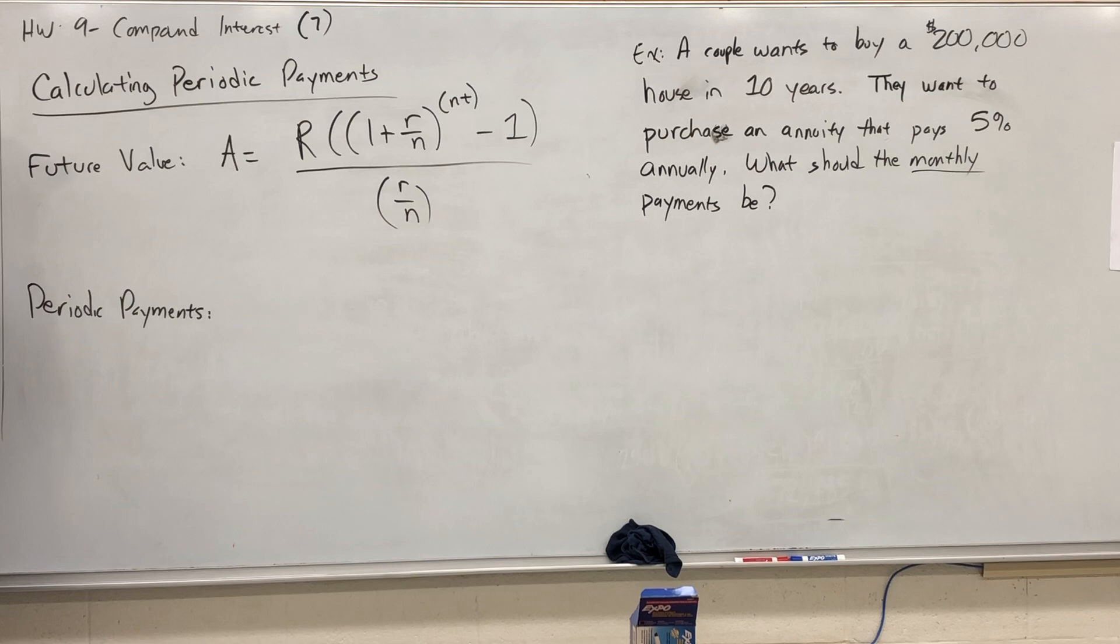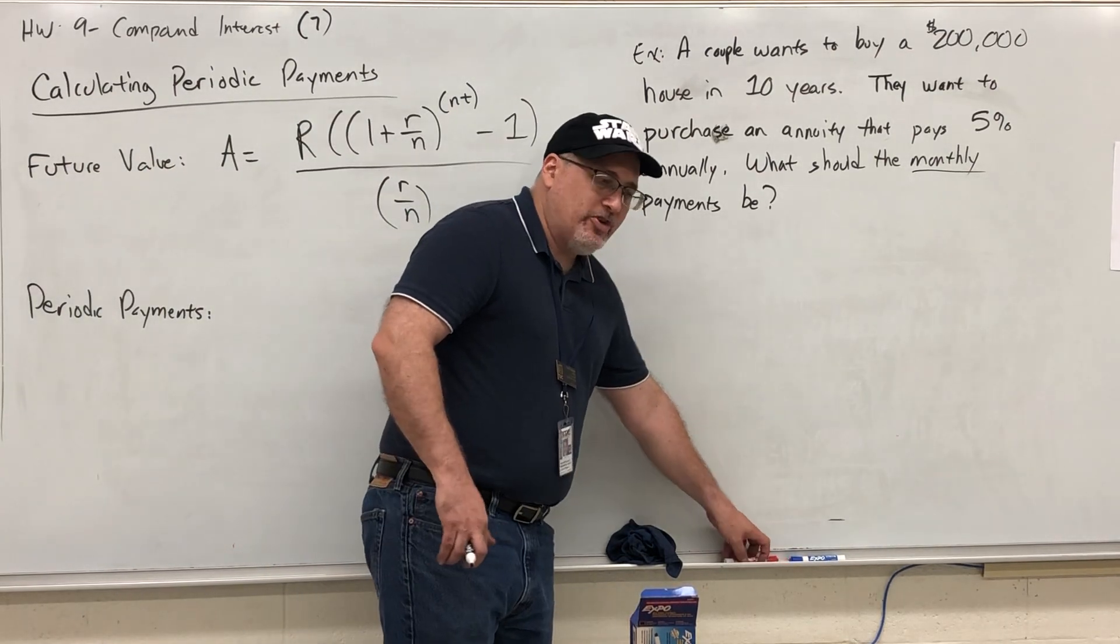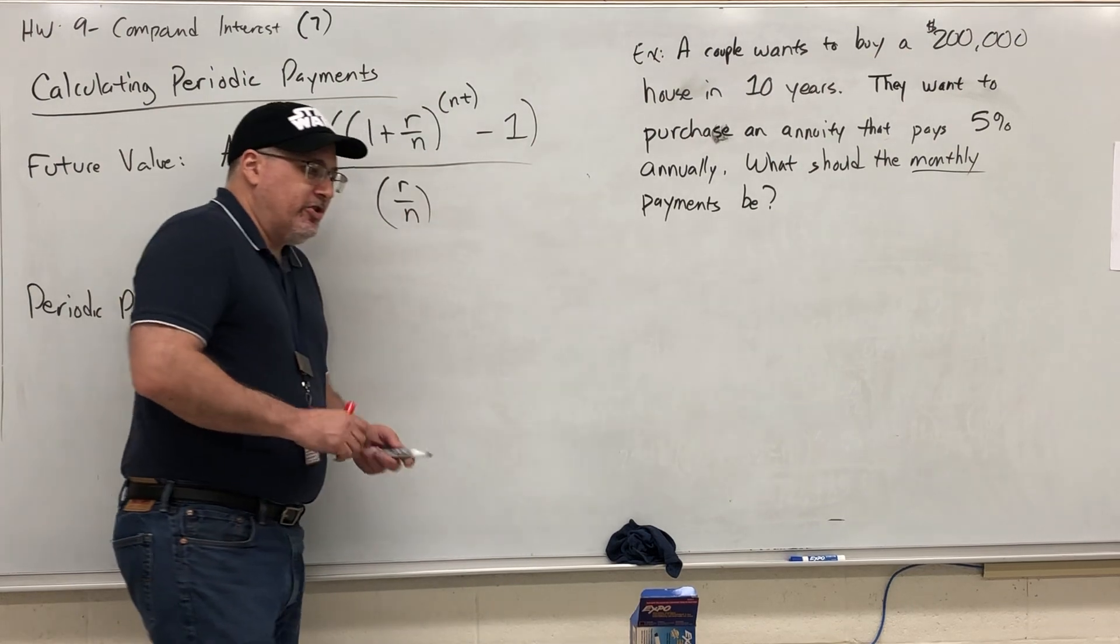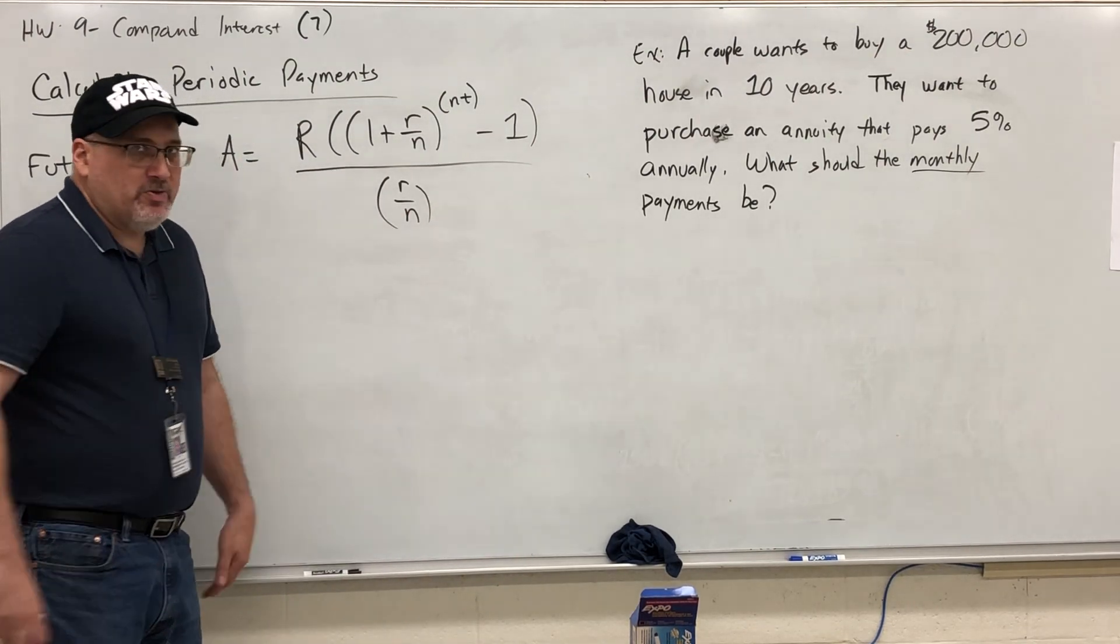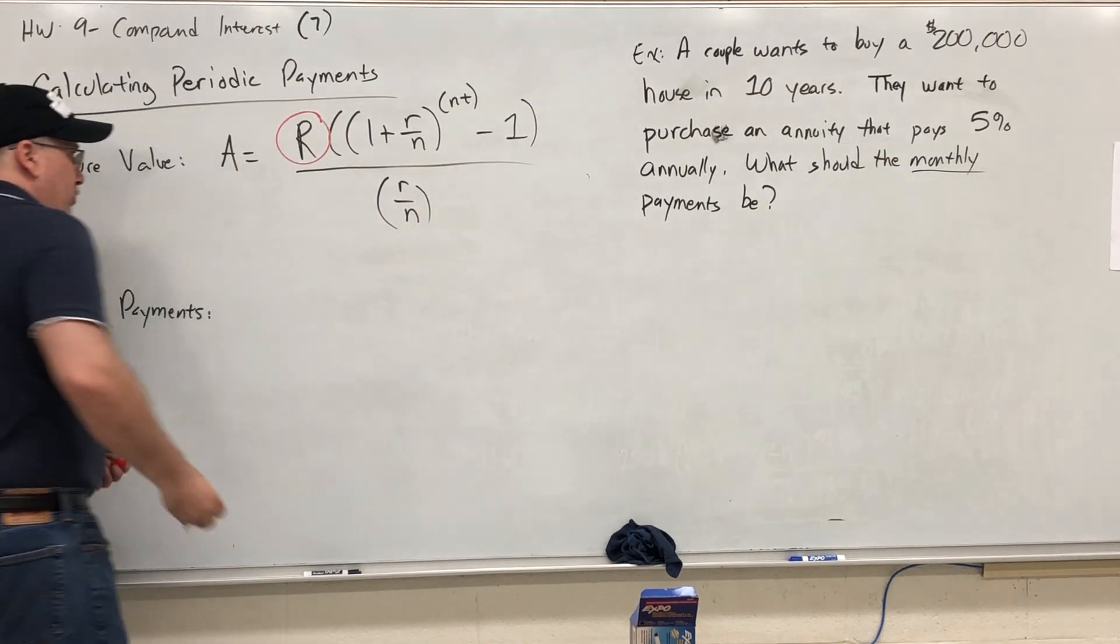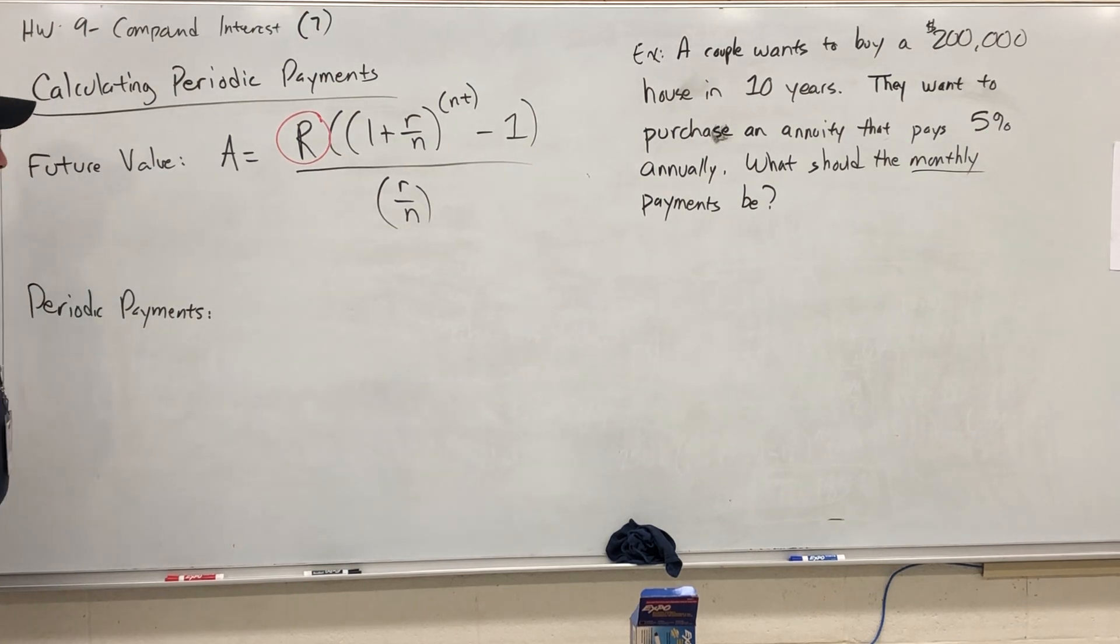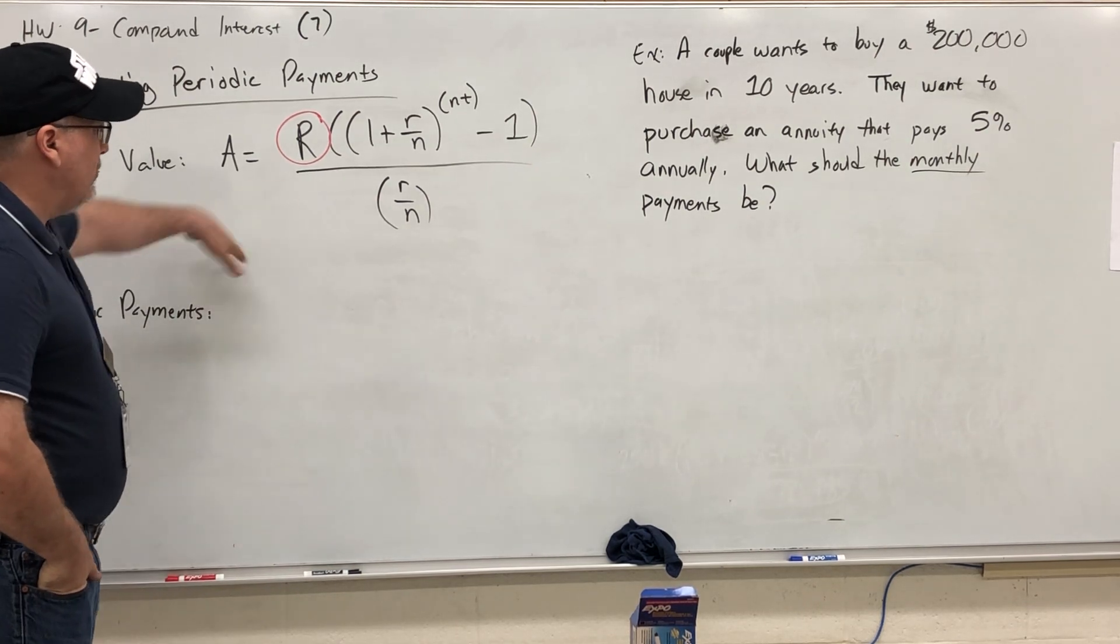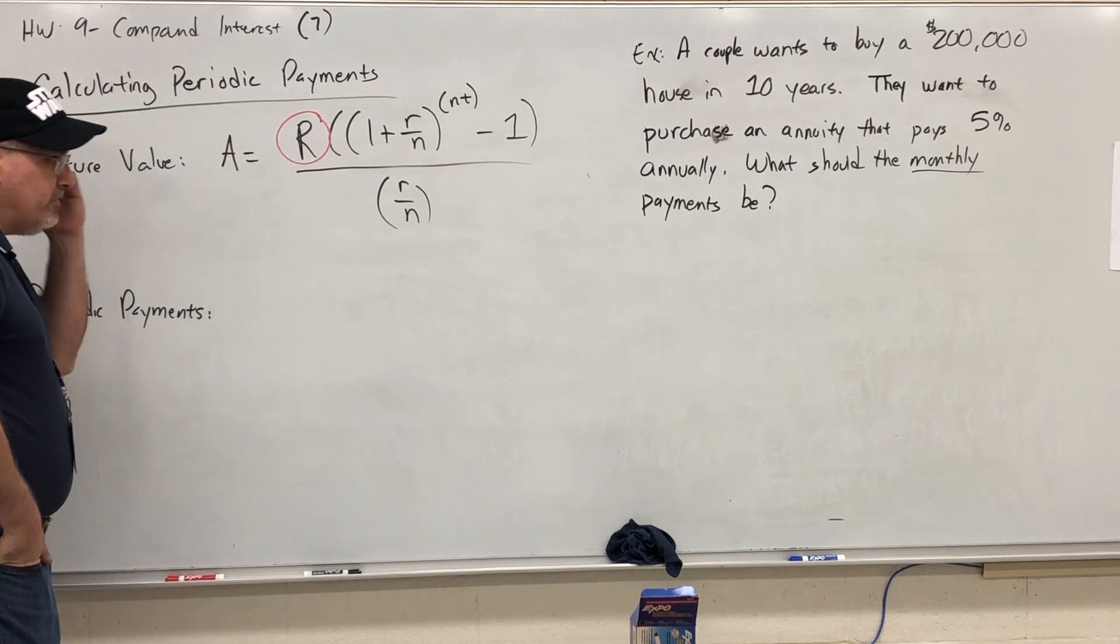So how do we do this? Well, if you think about it, the formula I'm about to show you is not in the book. I wish it were, because what they want you to do is the same algebra problem over and over again. Let's just do it once and make a new formula. We need a formula that says R equals. Remember, R is the periodic payment that we're calculating. So we could substitute all the numbers that we know and then start doing algebra. But let's do the algebra first.